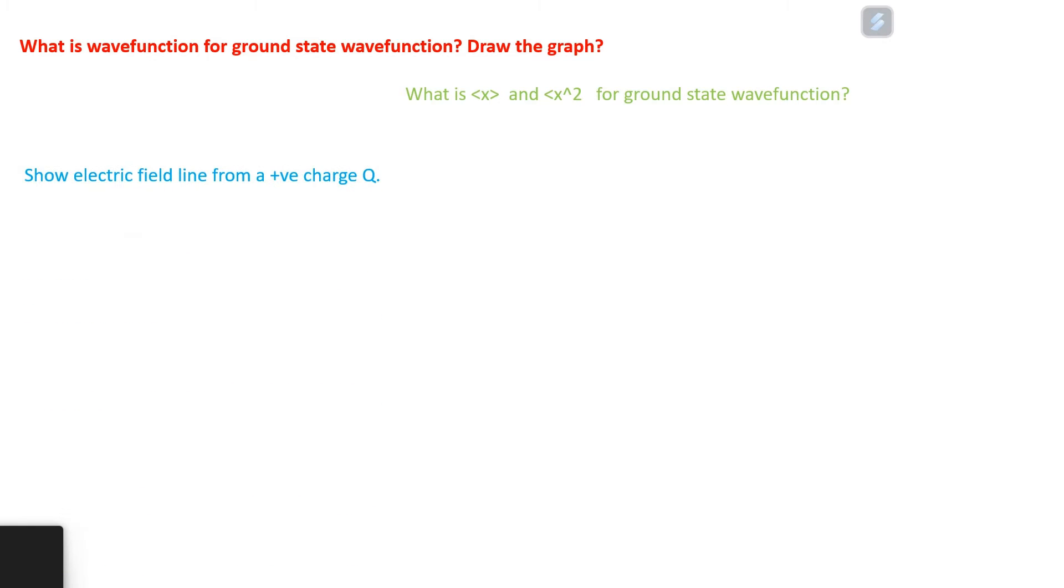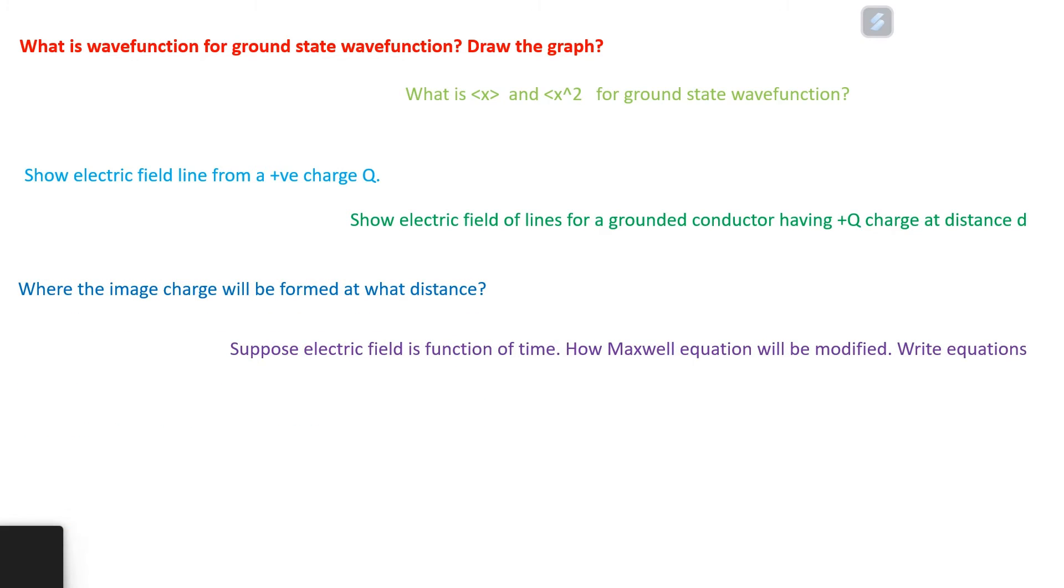Show electric field line from a positive charge q. Show electric field of lines for a grounded conductor having plus q charge at distance d. Where the image charge will be formed at what distance. Suppose electric field is function of time. How Maxwell equation will be modified? Write equations.